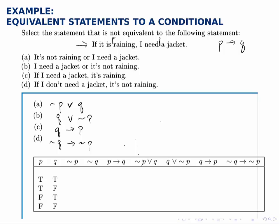all we'll do is build a truth table that will include a column for each of these, and we'll compare those columns to P implies Q, this column right here. So let's start.